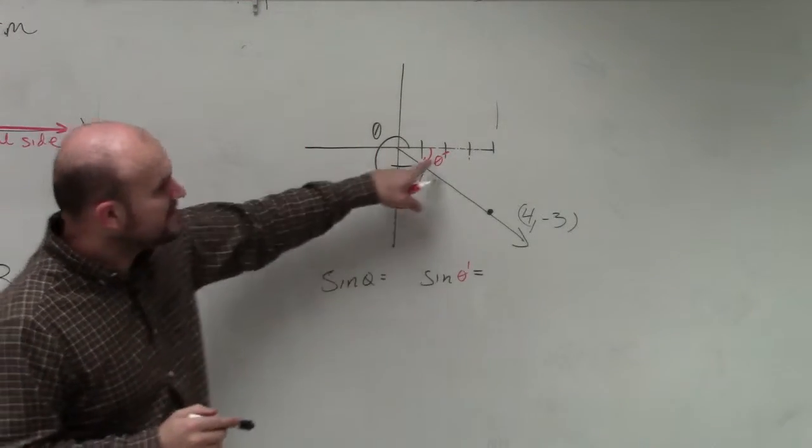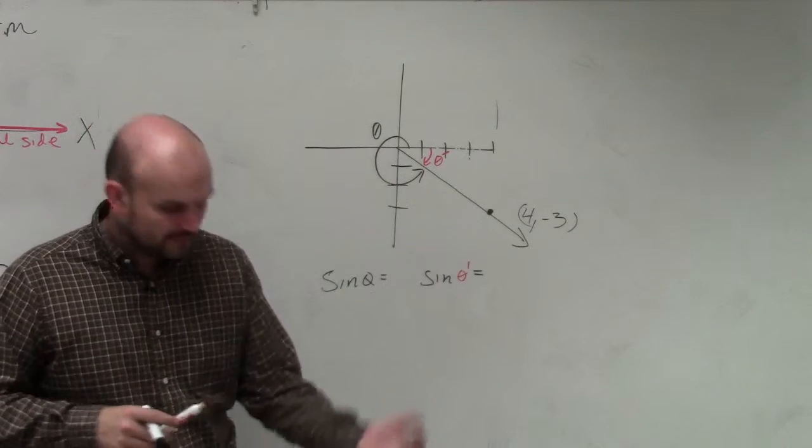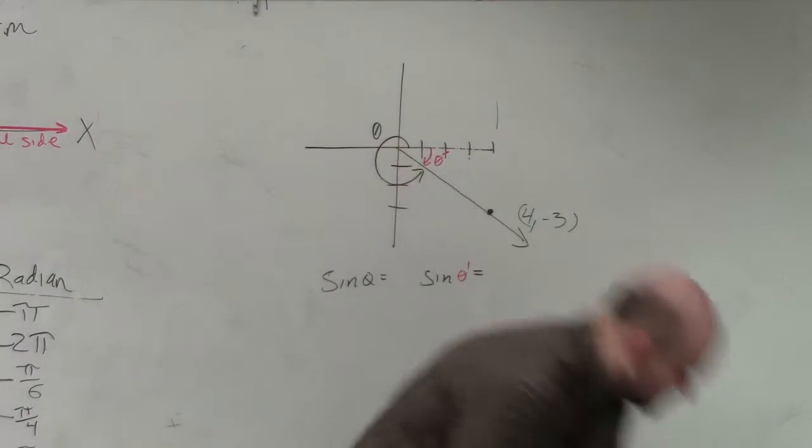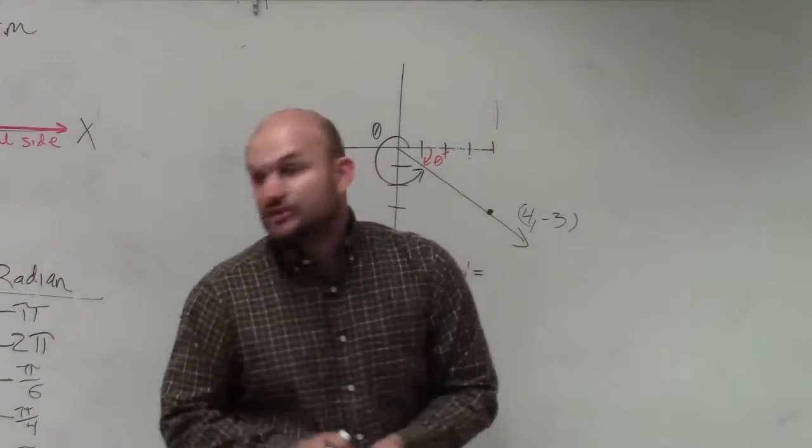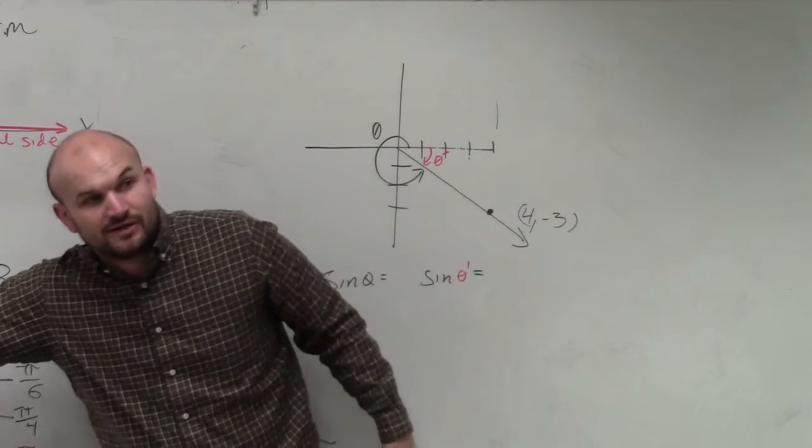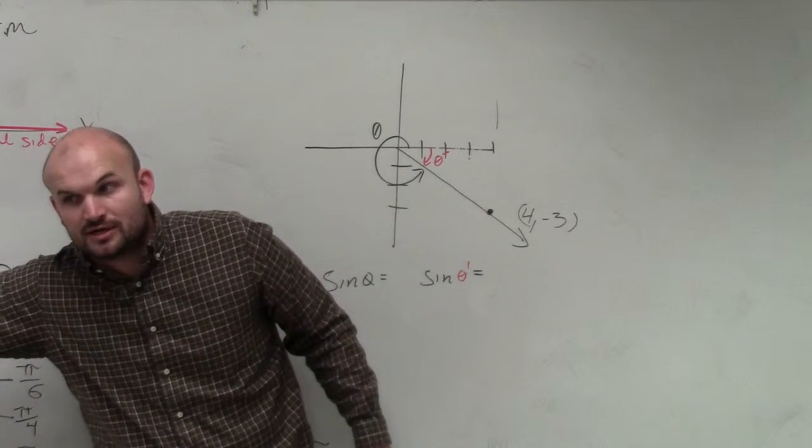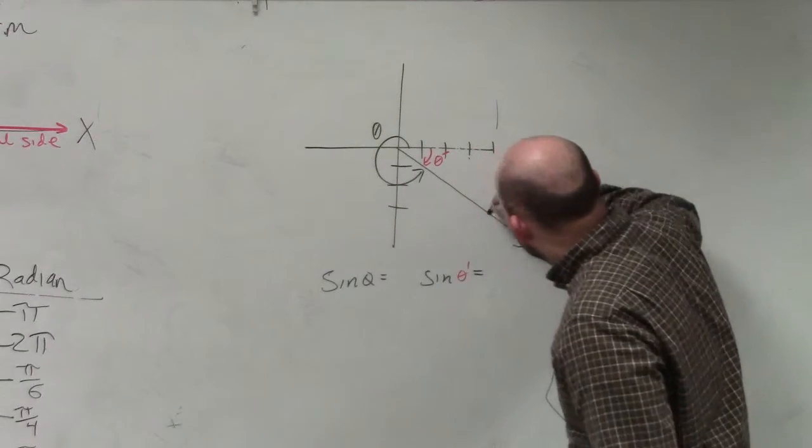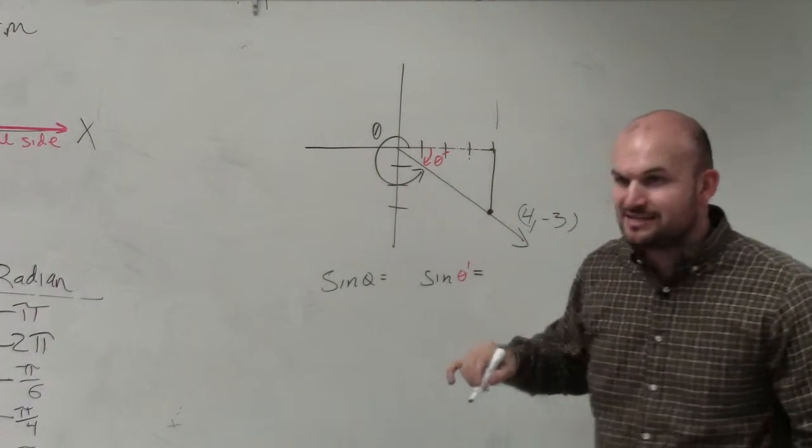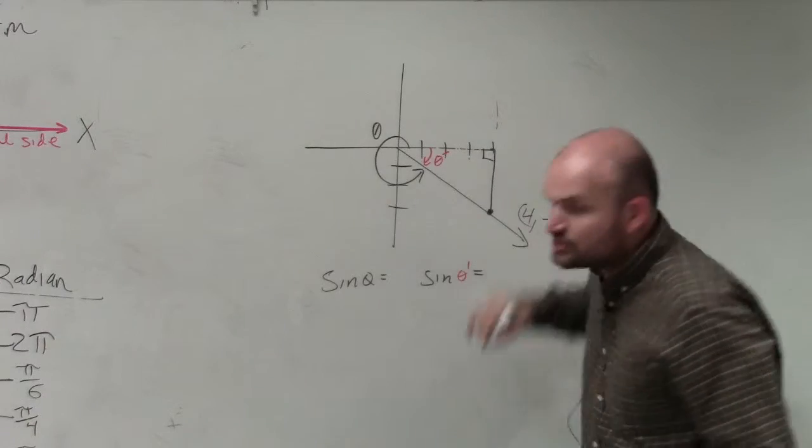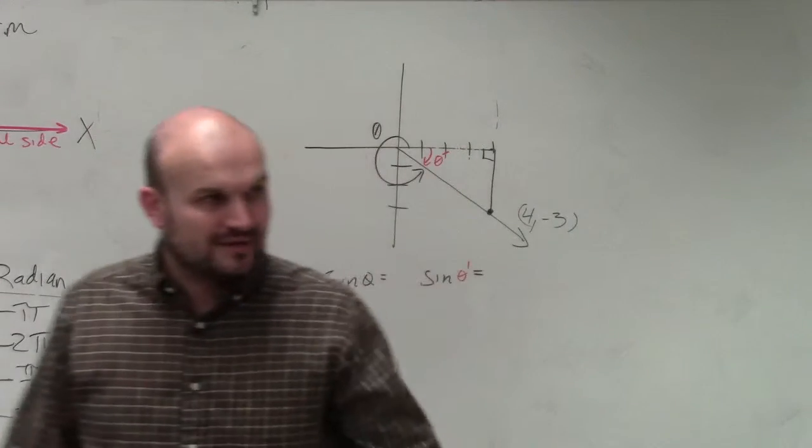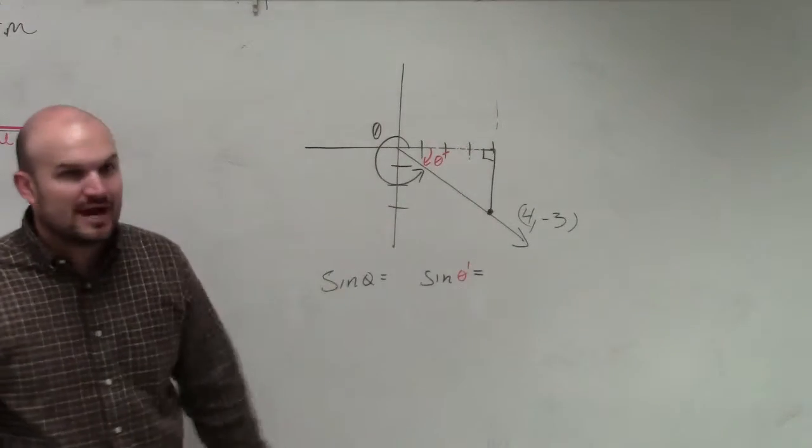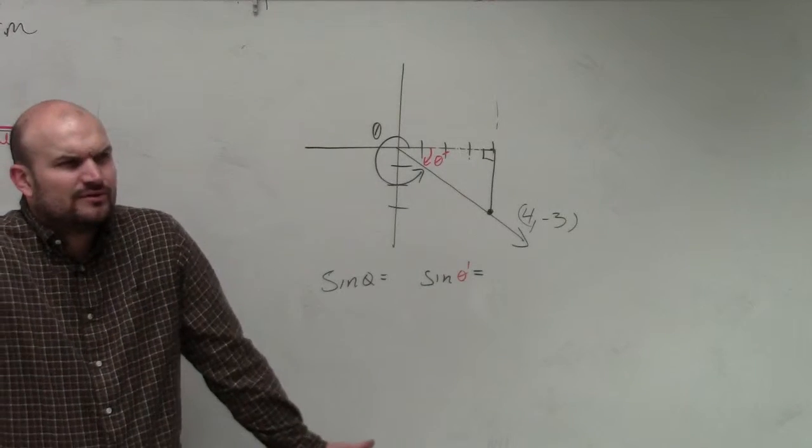However, if I'm using theta prime, can I now create a triangle with theta prime or my reference angle? Yes, absolutely. And what we do, I even drew your diagrams over here and told you these are what I want your triangles to look like. The way that you draw the triangle is you basically go through your point and you do a direct line to the x-axis, a perpendicular line which creates a 90 degree angle. Now I have created a triangle.